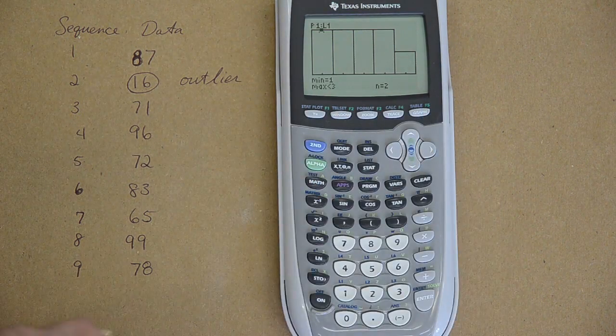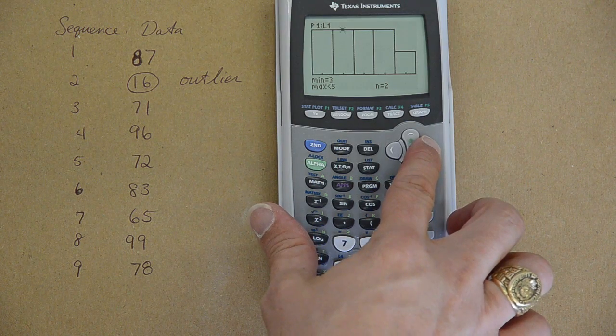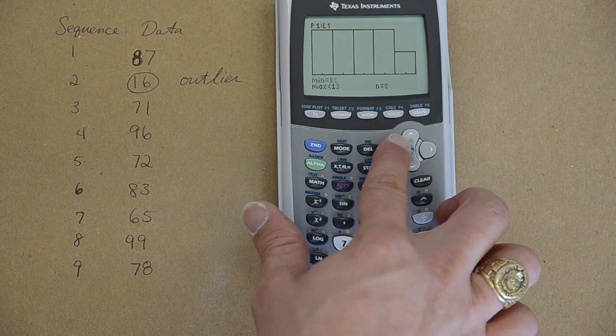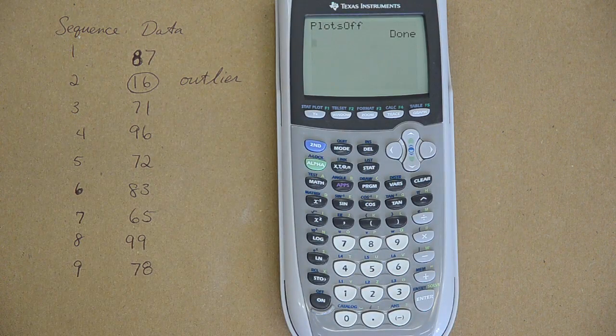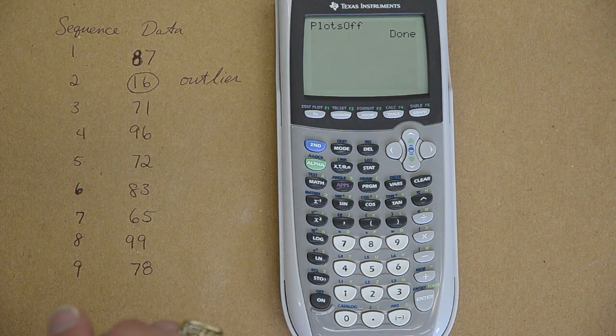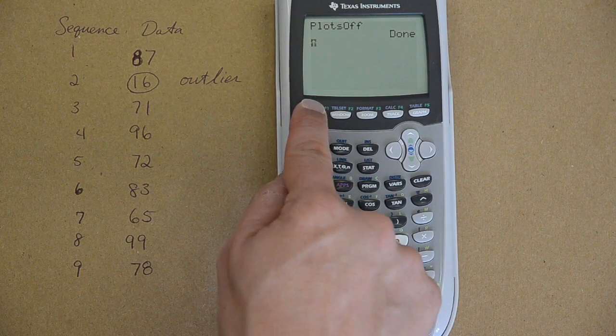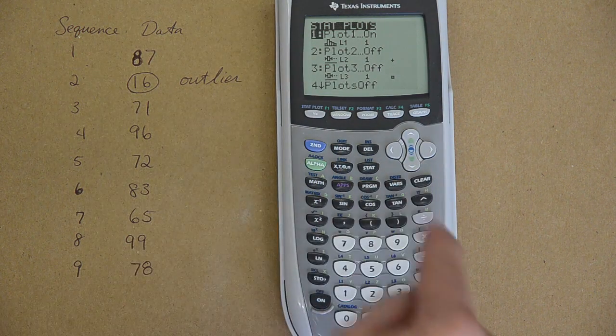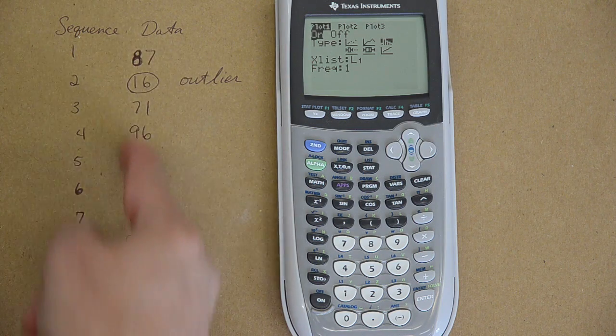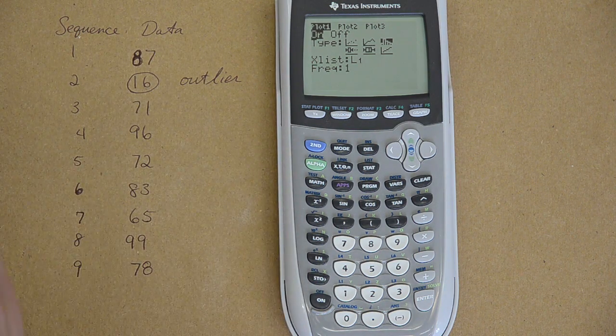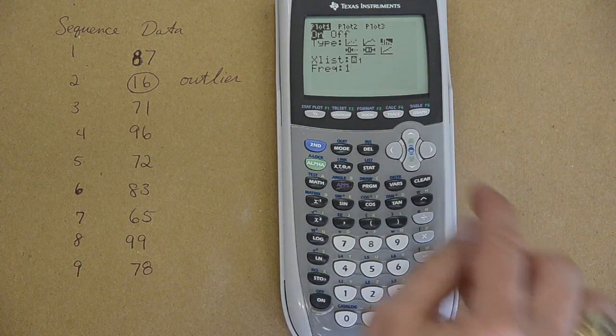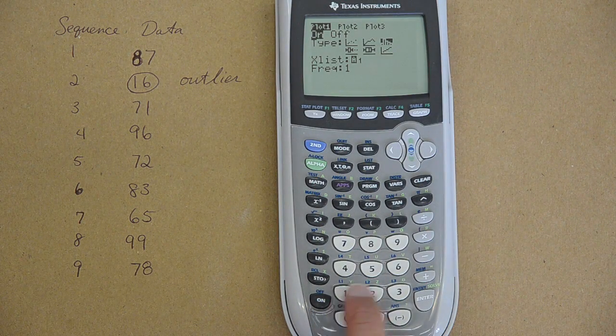If I hit trace, no wonder it is so flat. I used the wrong list, because remember we put data in list 1 and in list 2. I want to make a histogram with my actual data. So second stat plot, go back to choice 1. That is right I put the actual data I want to use in list 2. I have got to come down to x list and above your 1, 2, 3, 4, 5, 6, L1, L2, these are where you put your data values.